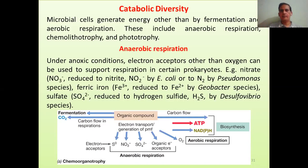Anaerobic respiration usually takes place under anoxic conditions, where oxygen is not available. Electron acceptors other than oxygen can be used to support respiration. For example, nitrate can be reduced to nitrite by E. coli, or to nitrogen gas by Pseudomonas species — common in leguminous plants where nitrogen fixation occurs. Ferric iron can be reduced to ferrous by Geobacter species. Sulfate can be reduced to hydrogen sulfide by Desulfovibrio species. This reduction leads to the generation of proton motive force, which drives ATP synthesis.